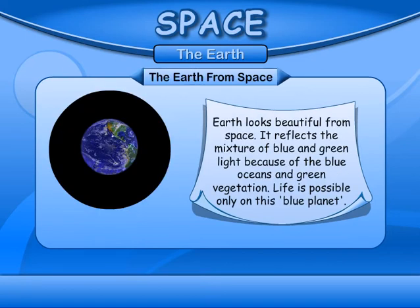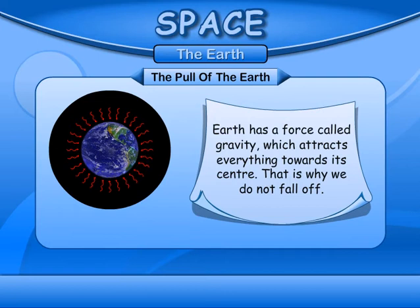The Earth from Space. Earth looks beautiful from space. It reflects a mixture of blue and green light because of the blue oceans and green vegetation. Life is possible only on this blue planet. Earth has a force called gravity which attracts everything towards its center. That is why we do not fall off.